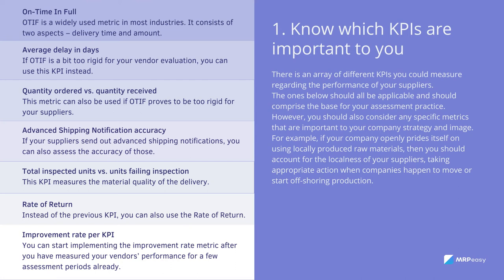Total inspected units versus units failing inspection: this KPI measures the material quality of the delivery. It requires you to inspect the quality of the received items and count the units failing inspection. Divide the units failing inspection by the quantity received, then multiply by 100 to get the percentage of units failing inspection.